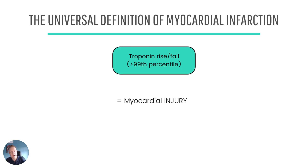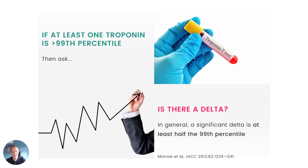Now if that's all you have — a troponin rise or fall with one level at least above the 99th percentile — you don't have a myocardial infarction; you have a myocardial injury. Once you've detected a myocardial injury, the next thing you want to know is whether it's acute or chronic. If it's acute, that means it's changing over time, so there will be a rise or a fall when we do serial sampling.